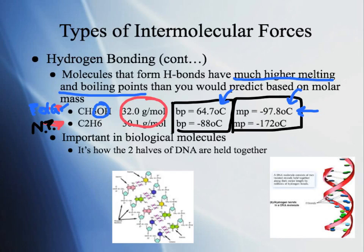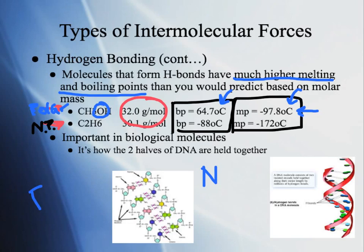Hydrogen bonding is super important in biological molecules. If you remember from biology, it's basically how the two halves of DNA are held together. The nitrogen bases — A, C, G, and T — are held together via hydrogen bonds, because those bases are nitrogenous and have lots of nitrogen, with hydrogens hooked up to nitrogen atoms attracting each other across the two strands.